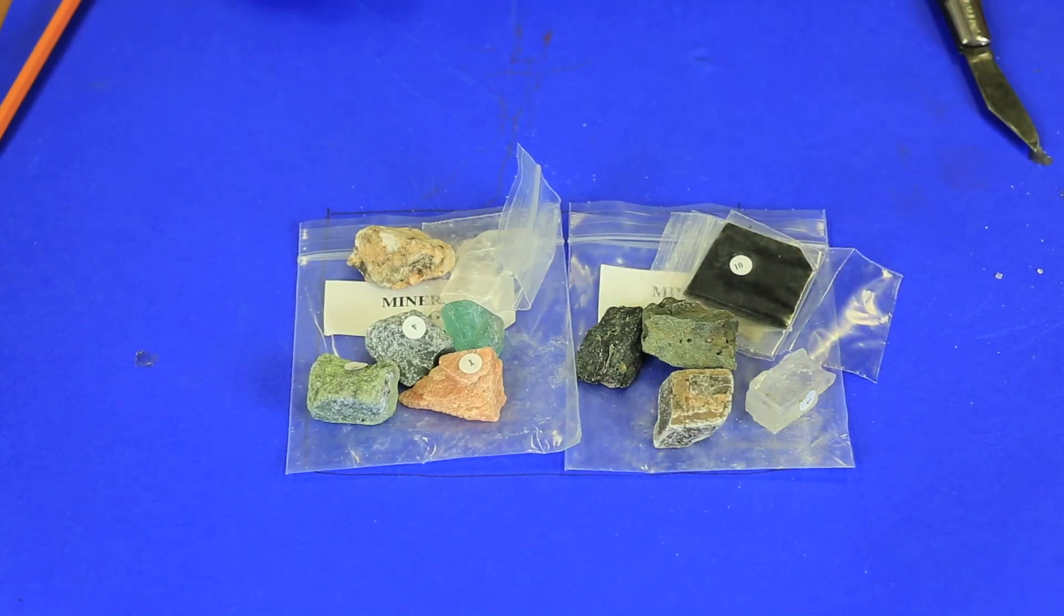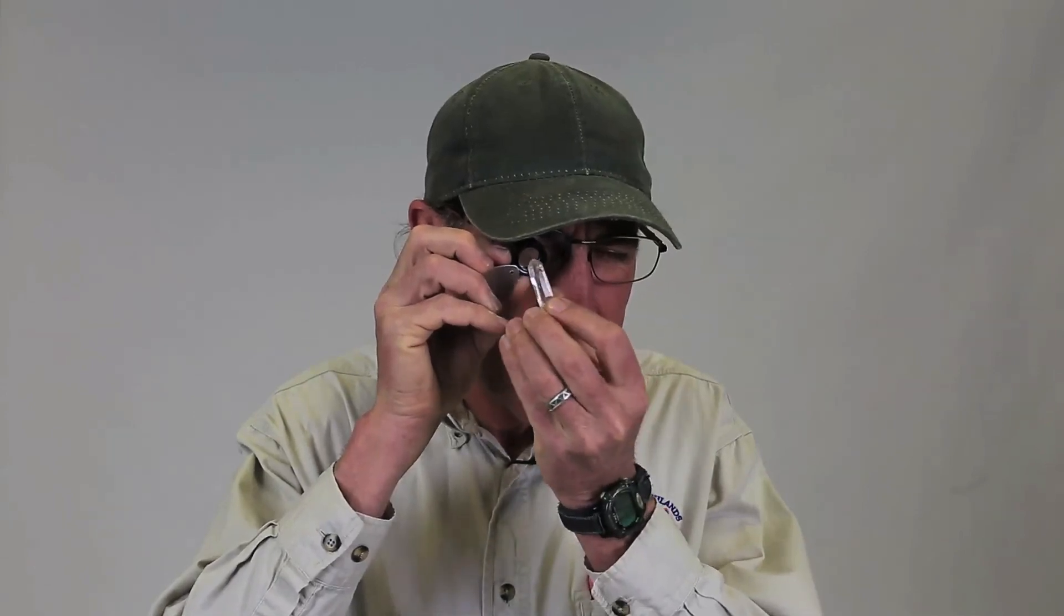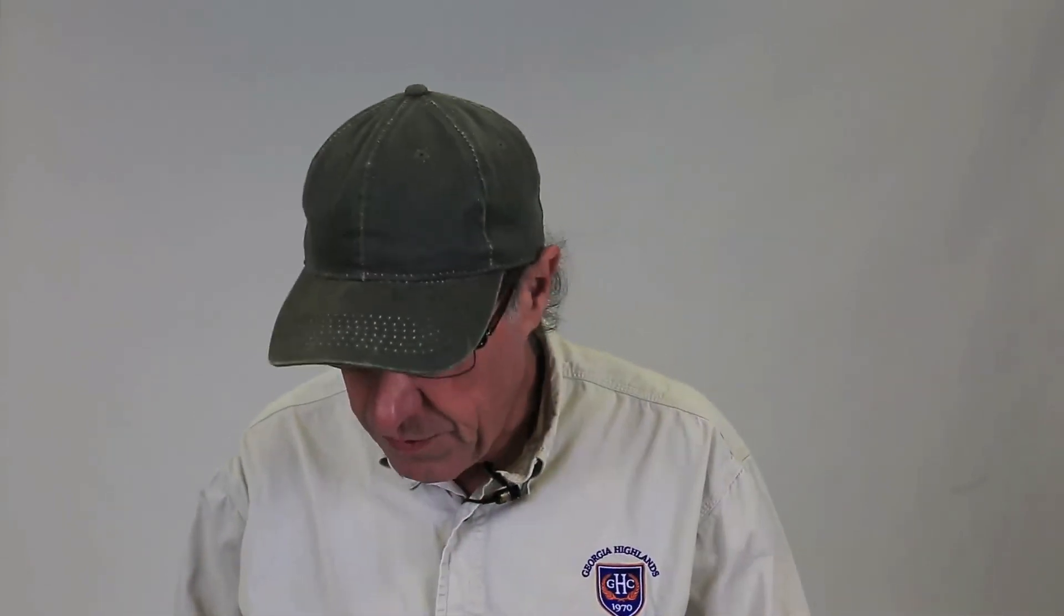I also want to show you how to use the hand lens. Proper use of the hand lens would be to hold it very close to your eye, right up next to your eye, and then move the sample up towards the hand lens until it's in focus. So hand lens goes right up against your eye and the sample moves in right tight and close to it.